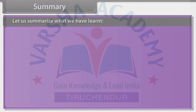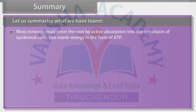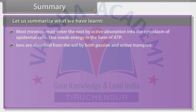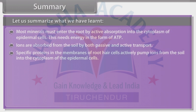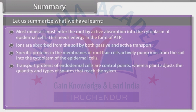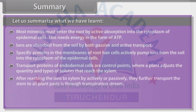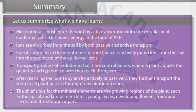Let us summarise what we have learnt. Most minerals must enter the root by active absorption into the cytoplasm of epidermal cells. This needs energy in the form of ATP. Ions are absorbed from the soil by both passive and active transport. Specific proteins in the membranes of root hair cells actively pump ions from the soil into the cytoplasm of the epidermal cells. Transport proteins of endodermal cells are control points where a plant adjusts the quantity and types of solutes that reach the xylem. After ions reach the xylem, their further transport up the stem to all plant parts is through the transpiration stream. The chief sinks for the mineral elements are the growing regions of the plant, such as the apical and lateral meristems, young leaves, developing flowers, fruits and seeds, and the storage organs.